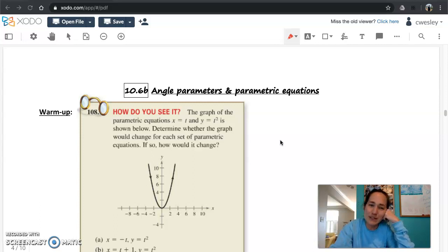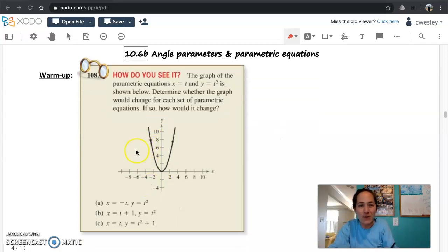Looking at the top of page four, I don't want to dwell on this warm up for too long. I love reiterating the idea that two different sets of parametric equations can give you the same shape graph, but maybe it's traced out in a different way, whether it's more quickly, or less quickly, or in a different orientation.